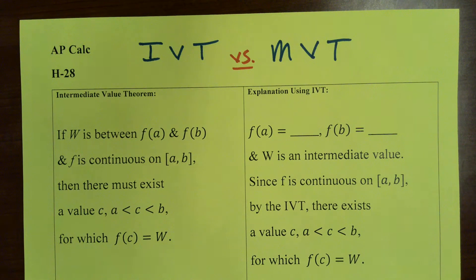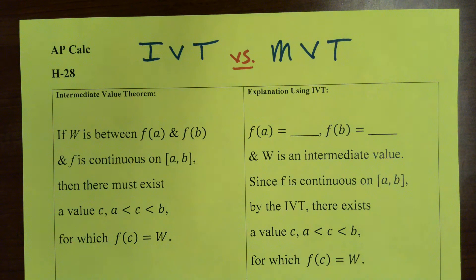So here's H28. This should be fast. Here we're getting used to comparing the intermediate value theorem and the mean value theorem.